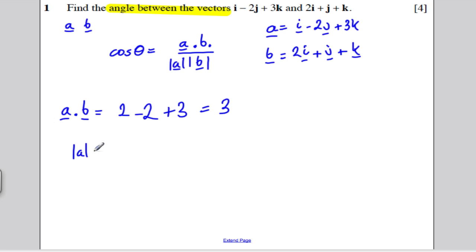What's the magnitude of A? Well, it's the square root of 1 squared plus minus 2 squared plus 3 squared. That's 1 and 4 is 5. Add 9 is 14. So this is the square root of 14.